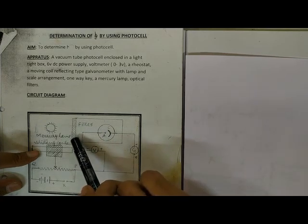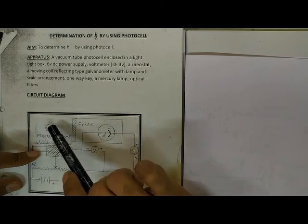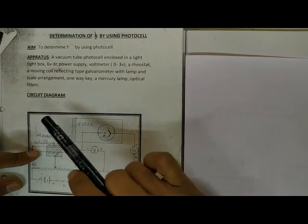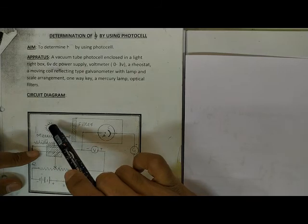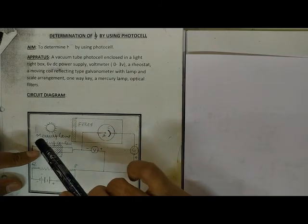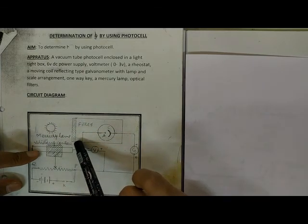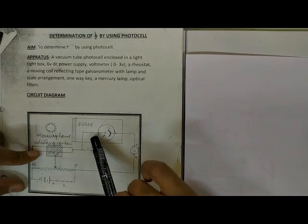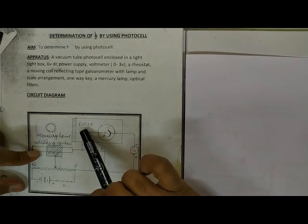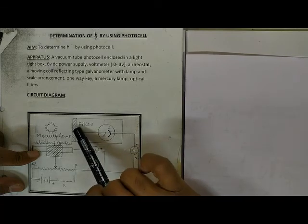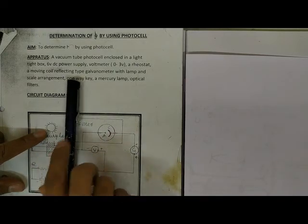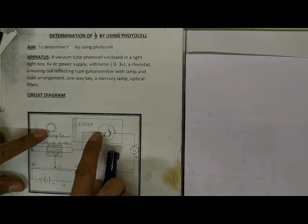We will use approximately 5 filters so that only the frequency of that particular colour falls on the photocell. That is the purpose of the filter. The yellow lamp light consists of all colours, but we want to study specifically the behaviour of current and voltage corresponding to a particular frequency. That is why we will use red, green, yellow, orange, and blue filters — these 5 filters.